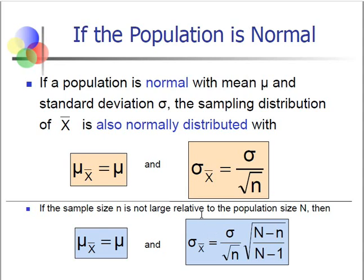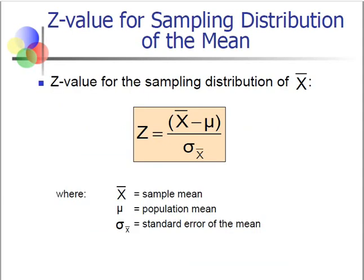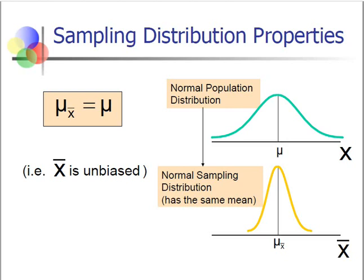From our previous topic on probability distributions, we saw how we can use the standard normal to find the probability of any random variable that is normally distributed. To find the z-value, we take x-bar — that is the sample mean — subtract the population mean, and divide by the standard error.